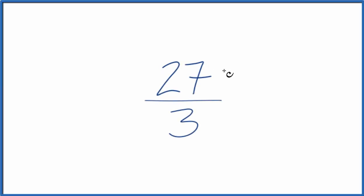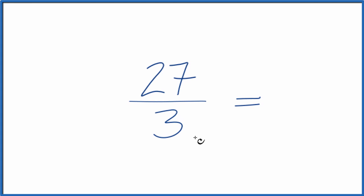Let's simplify the fraction 27 thirds. What we want to do is find another fraction that's equal, it's equivalent to 27 over 3, and reduce it or simplify it to its lowest terms.